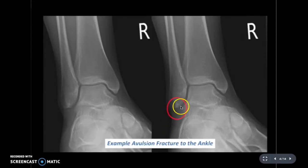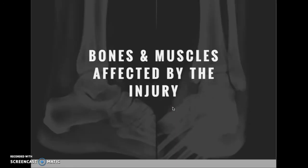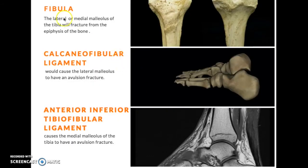This is an example of an avulsion fracture of the ankle. As you can see here, a small portion of the lateral malleolus of the fibula has been chipped off from the epiphysis. The first bone affected is the fibula, where the lateral malleolus will detach from the diaphysis of the bone.